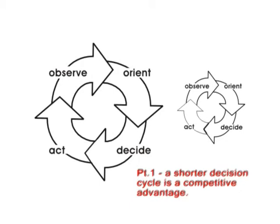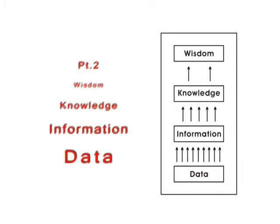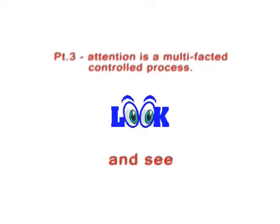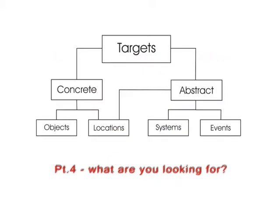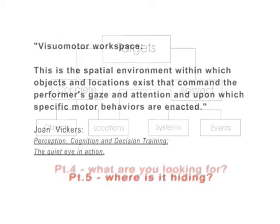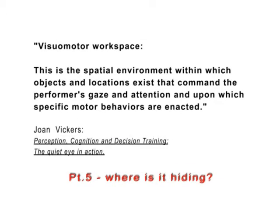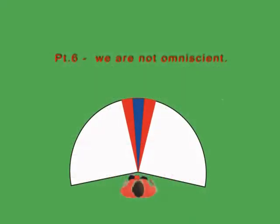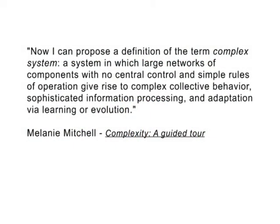As a quick recap so far: in part one, we saw that the OODA Loop is a decision-making model for time-competitive competition. In part two, the decision-making process feeds on raw data for information. Part three, we gather data by focusing attention through a search with gaze control. Part four, the search is for meaningful targets for attention. Part five, these targets exist in various workspaces. Part six, we face physical limitations in the search. All of this gives rise to a complex system, so now we'll take a look at some of the characteristics of complexity.